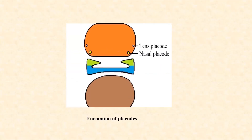Ectodermal swellings develop in relation to the frontonasal process — the yellow structures here. One is the lens placode and one is the nasal placode. The lens placode lies cranial and lateral to the nasal placode. These structures, along with the maxillary and mandibular processes, are formed by day 28 of intrauterine life. The right and left mandibular processes meet in the midline to form the lower jaw and mesodermal basis of the lower lip.